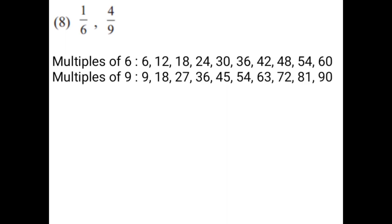1 upon 6 and 4 upon 9. You have to write the multiples of both the denominators, that is 6 and 9. After writing the multiples of 6 and 9, you have to find the lowest common multiple in order to make the denominators equal. Multiples of 6 and multiples of 9 — the first common multiple is 18. So the lowest common multiple of 6 and 9 is 18. Now you have to make the denominators equal, that is denominator 18.